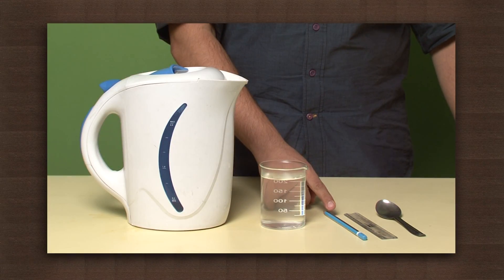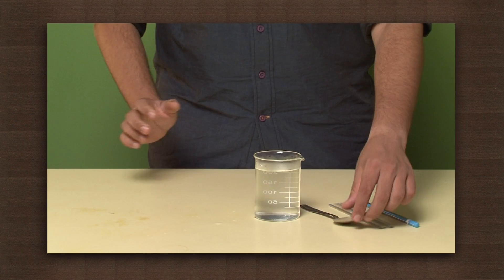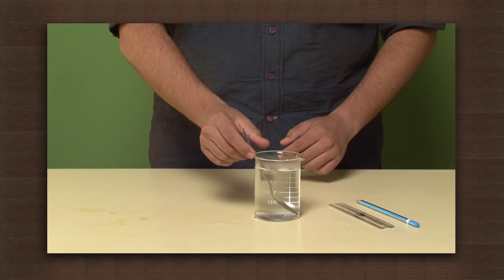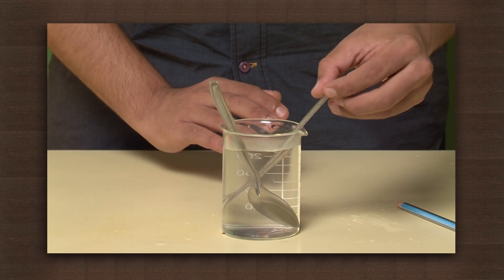We need some hot water in a beaker, pencil, plastic scale and a metal spoon. Put the metal spoon, plastic scale and pencil in the hot water.